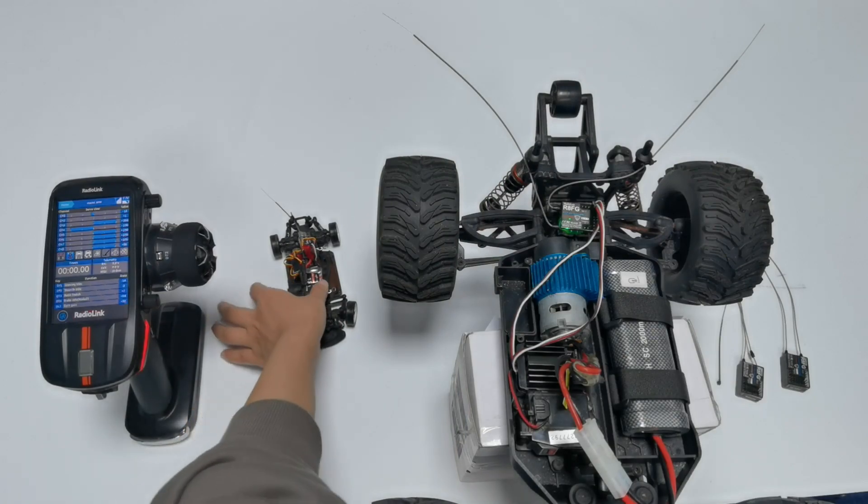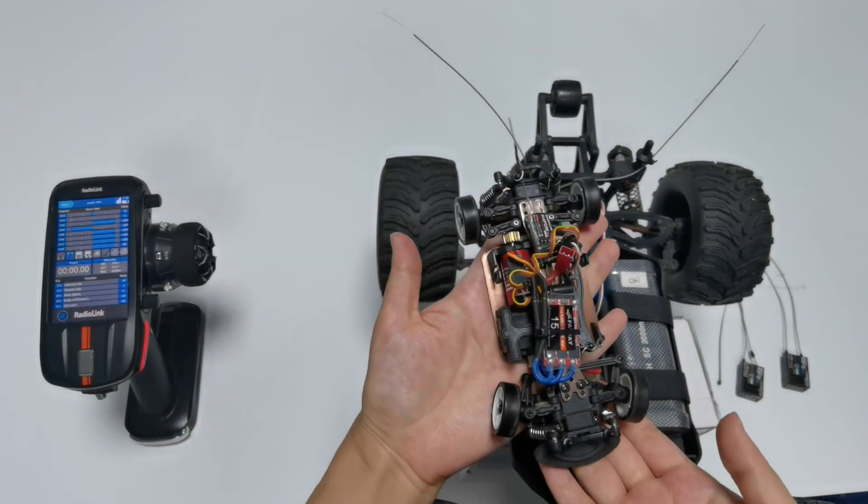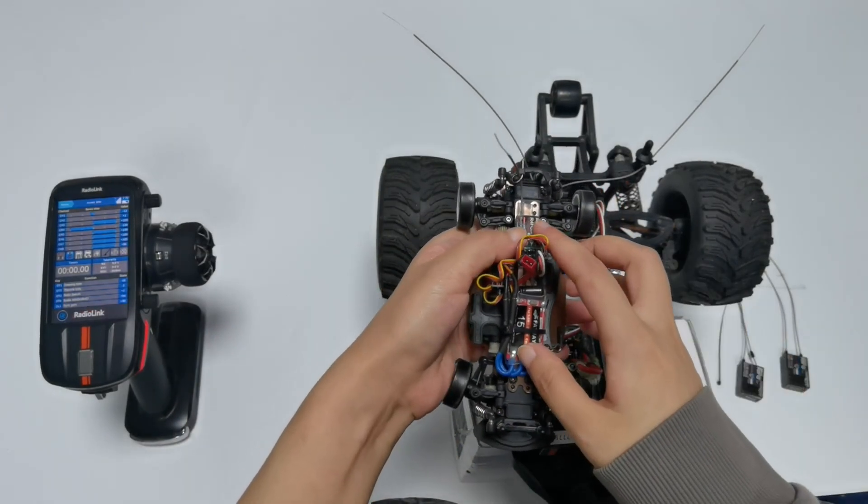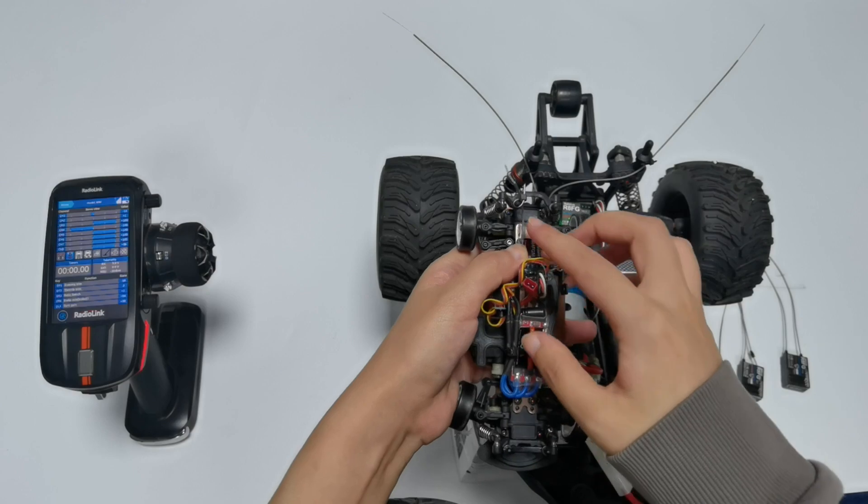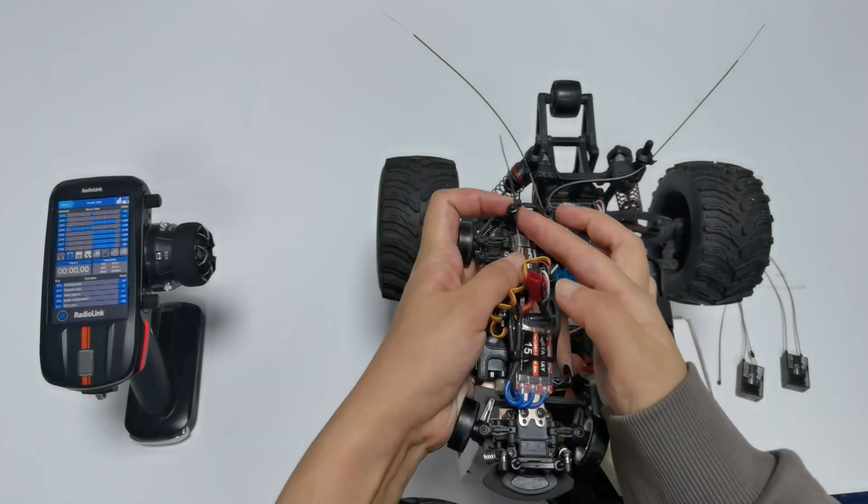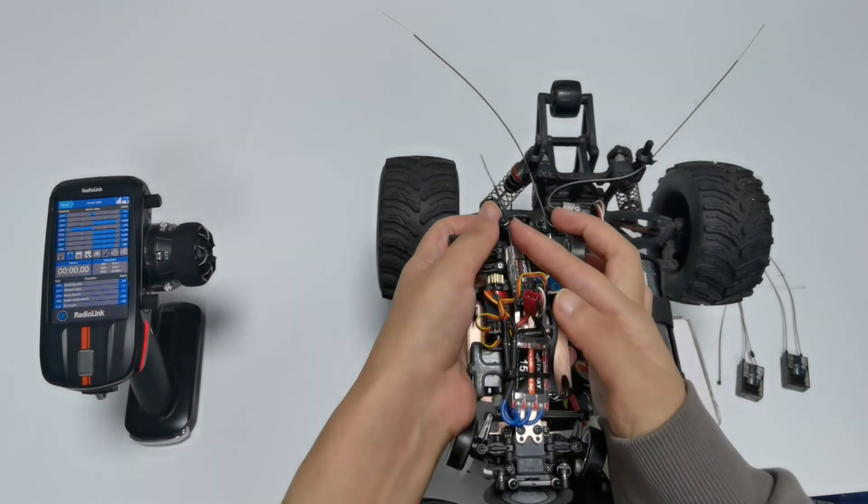Install RAFG on this mini car. I use a double-sided sticker to fix the receiver here and fix the antenna on the rod with a strap to make the antenna vertically upward.